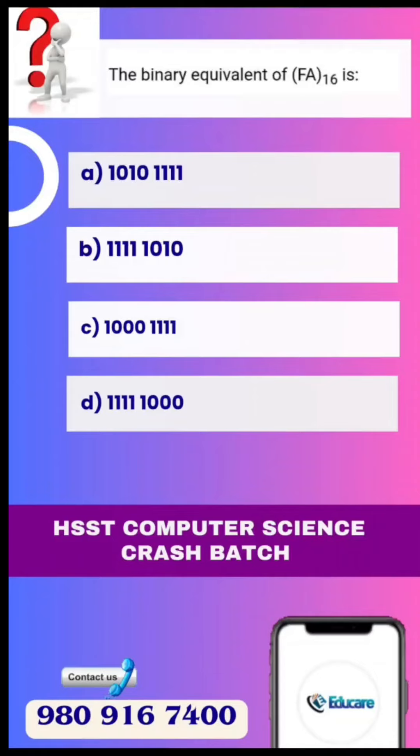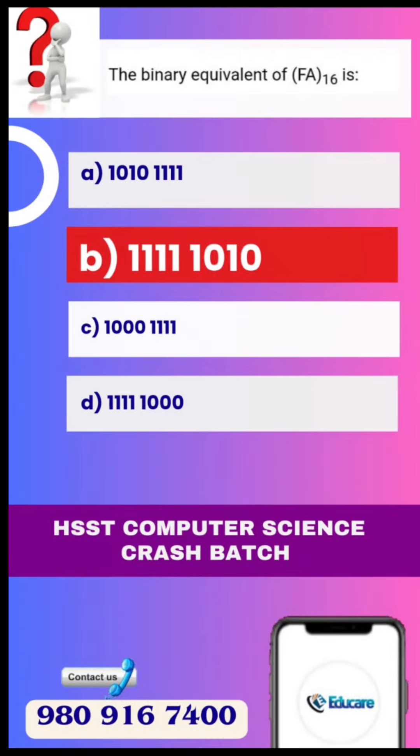Welcome to educate. Today's question is: The binary equivalent of FA (hexadecimal) is — Option A: 1010 and four 1s, Option B: four 1s and 1010, Option C: 1-triple-0 and four 1s, Option D: four 1s and 1-triple-0. The correct answer is Option B: four 1s, 1010.